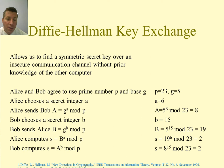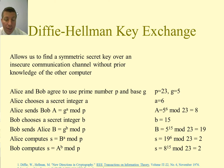Alice sends Bob a number generated from the public values g and p combined with her secret integer a. Bob similarly chooses a secret integer b and sends Alice g^b mod p. Then Alice and Bob can both compute a shared secret key s: Alice computes B^a mod p, and Bob computes A^b mod p.